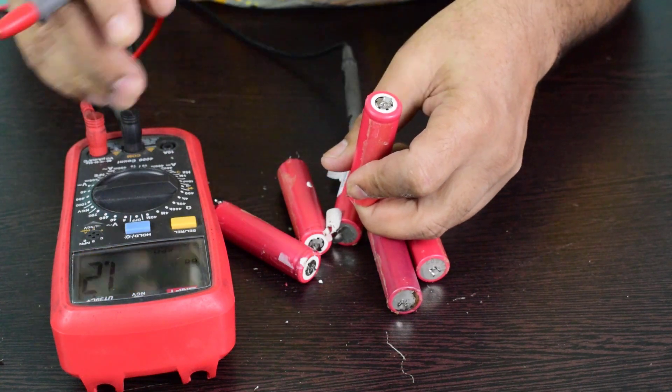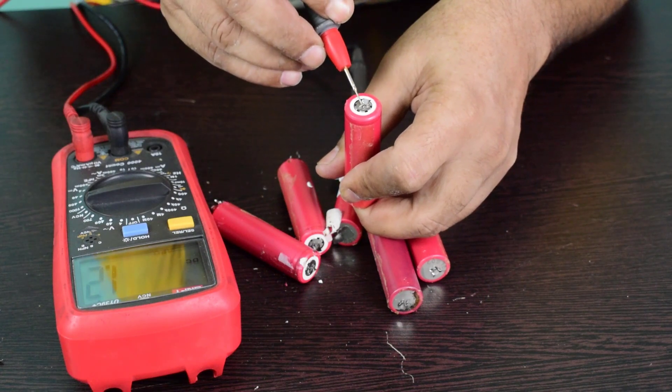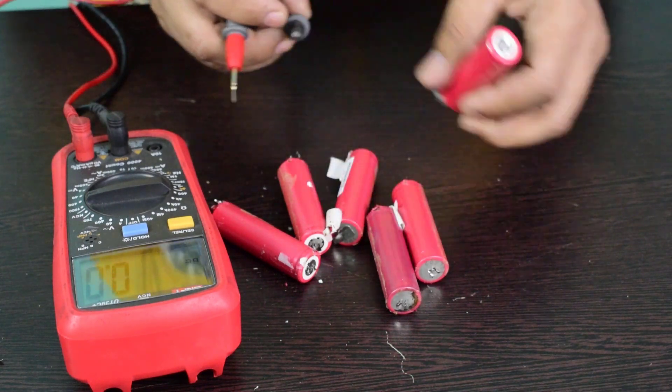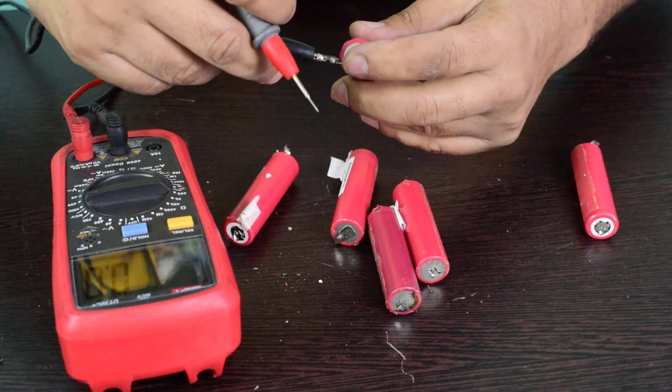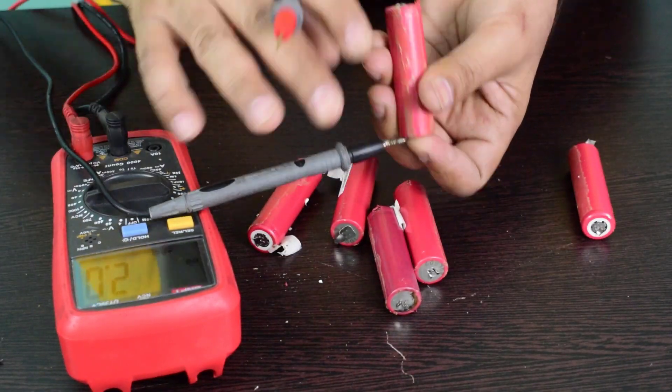It is giving only 1.2 volts. Let us check another cell. It is giving 2.1 volts.